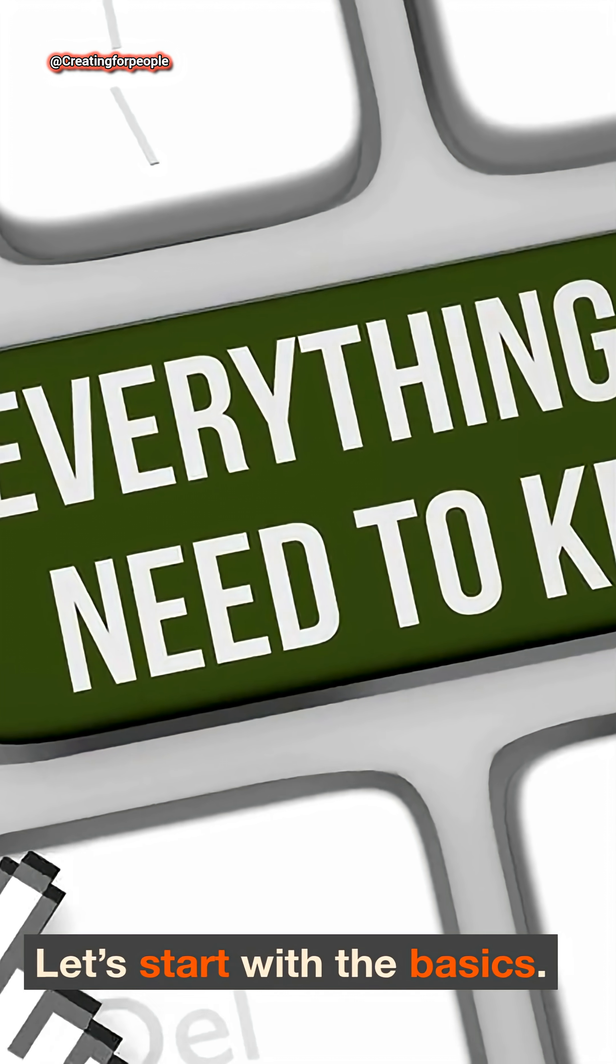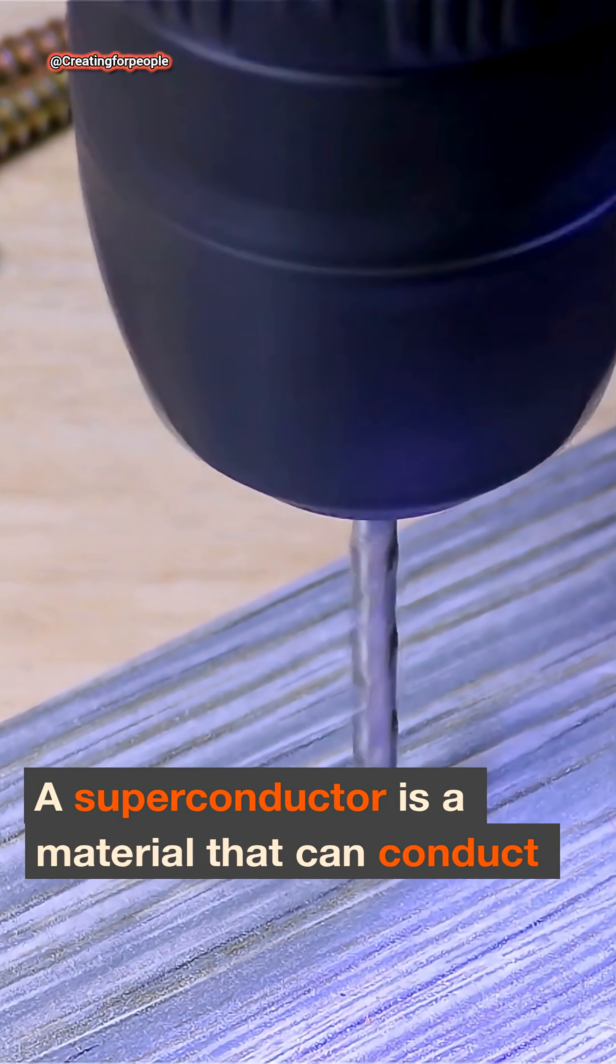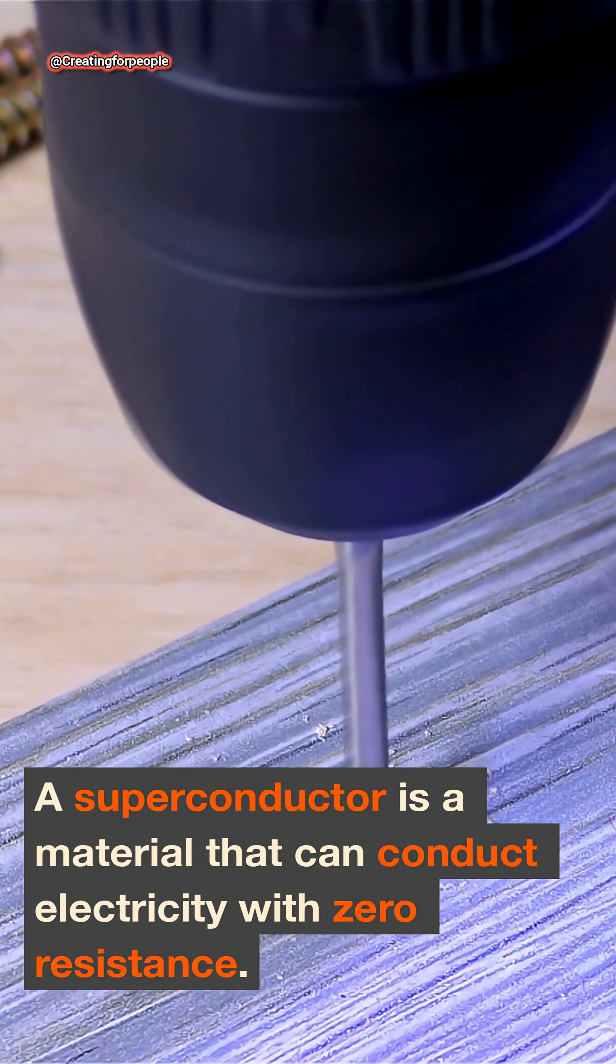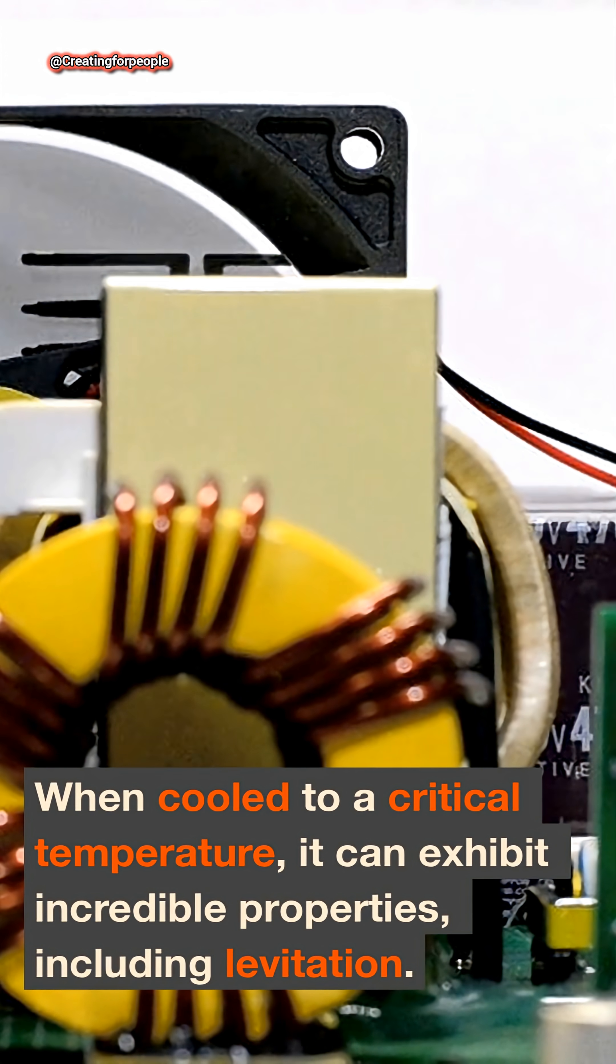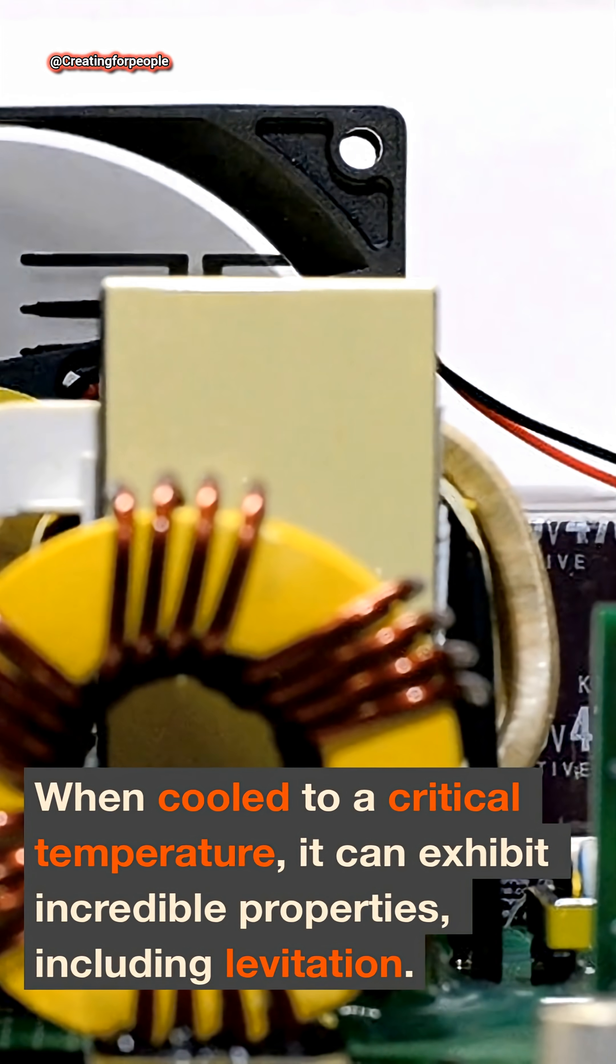Let's start with the basics. A superconductor is a material that can conduct electricity with zero resistance. When cooled to a critical temperature, it can exhibit incredible properties, including levitation.